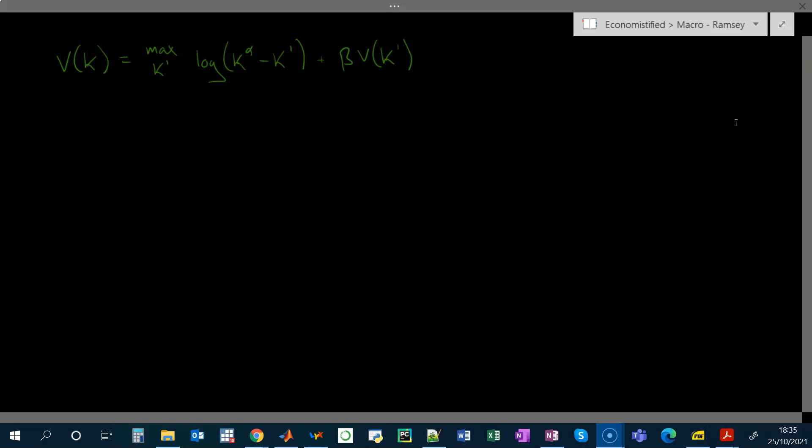So we guessed the functional form for our value function, we found the optimal choice of the capital stock given that guess for the value function, and then we plugged them both into the Bellman equation and verified our guess and found the appropriate coefficients for the value function.